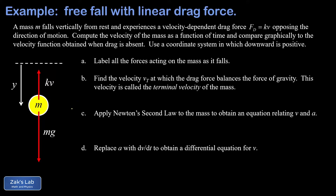In part b we're asked to find the terminal velocity vt at which the drag force balances the force of gravity. The drag force just keeps getting bigger as the mass falls faster and faster. Eventually the drag force kv equals the force of gravity mg, the acceleration becomes zero, and we level off to a final terminal velocity. Solving for that velocity gives us terminal velocity equal to mg over k.